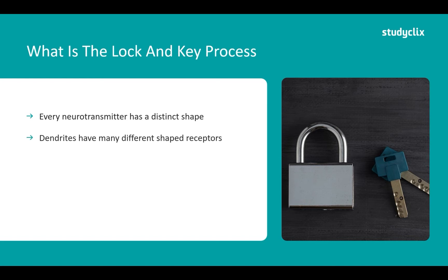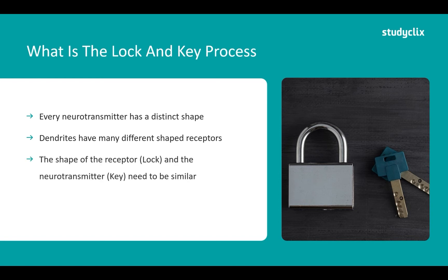On our dendrites we have what we call receptor sites and these also vary in shape. The shape of our receptor site and the neurotransmitter needs to be similar, because when they bind they unlock a response. So the receptor site is considered our lock and the neurotransmitter the key — when the key fits the lock, it unlocks and causes something to occur.